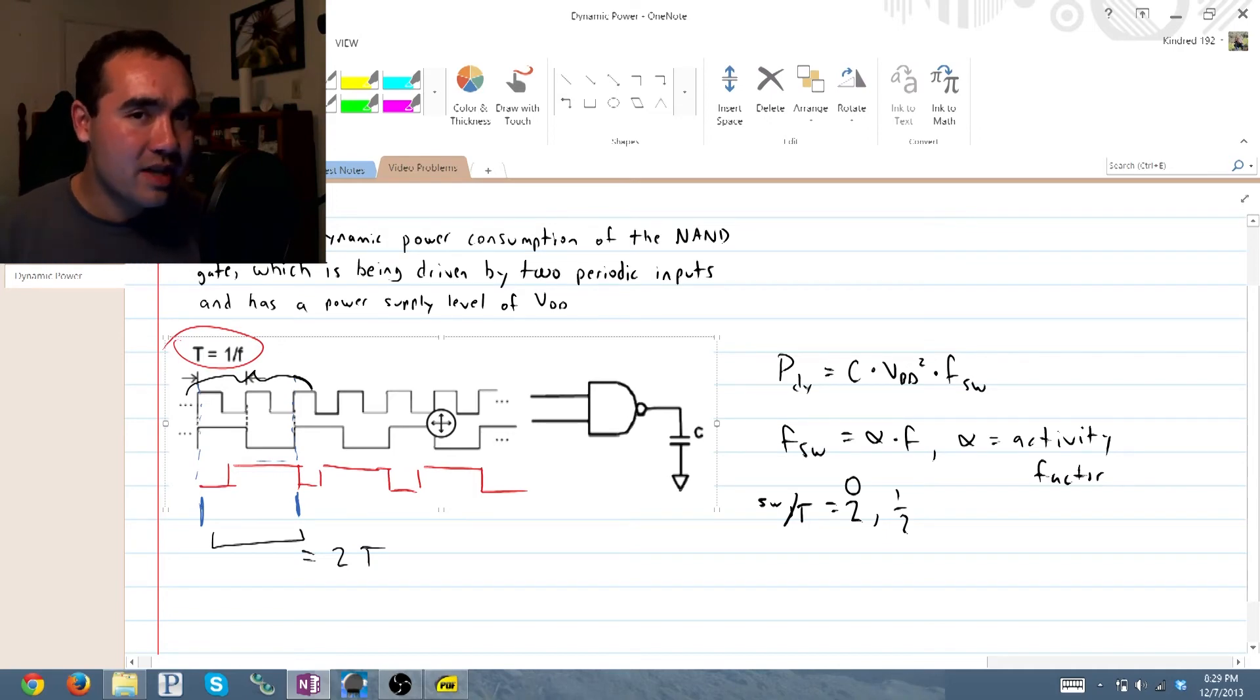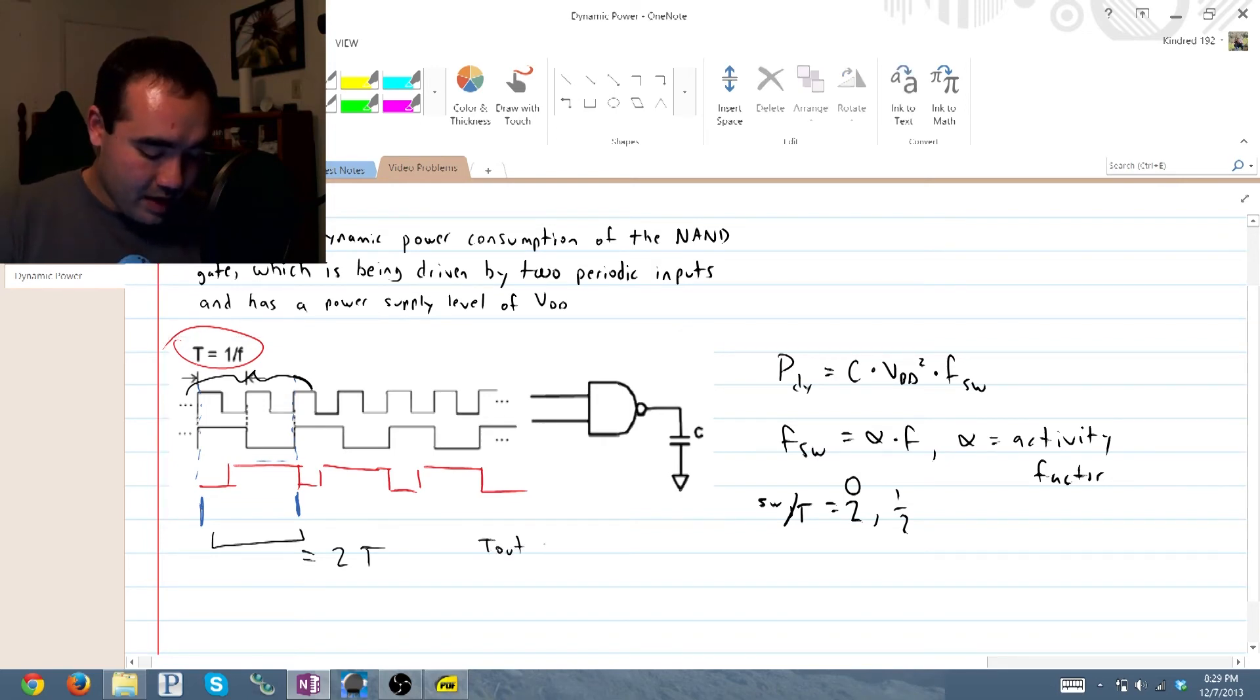So you can actually say because our input period is defined as T that T out is equal to two T. Therefore, our F out is equal to one half. Makes sense. Pretty simple.